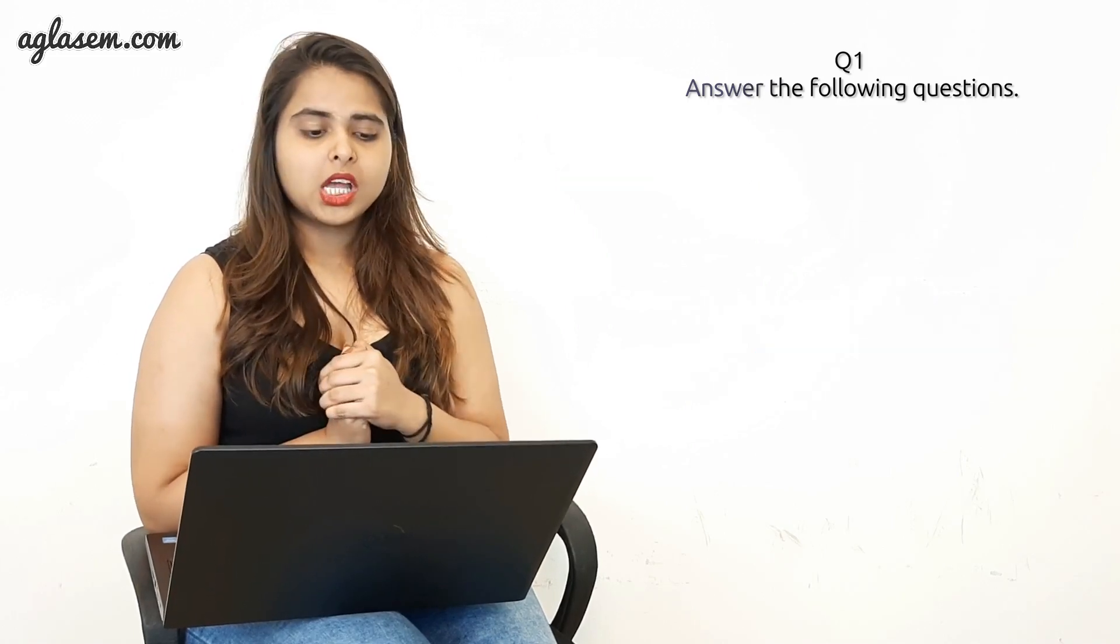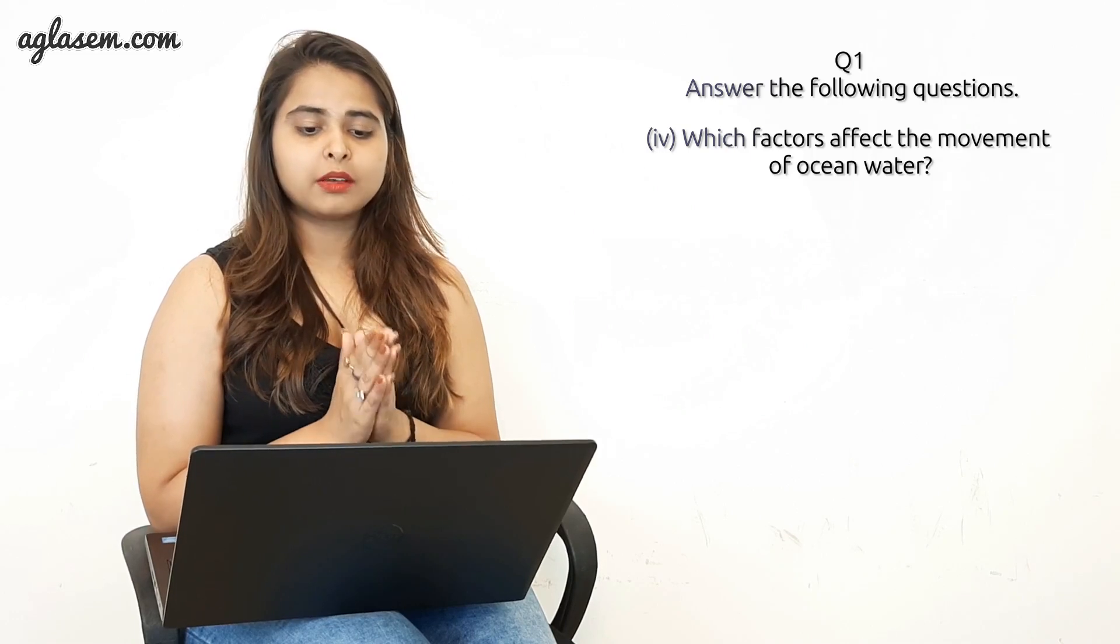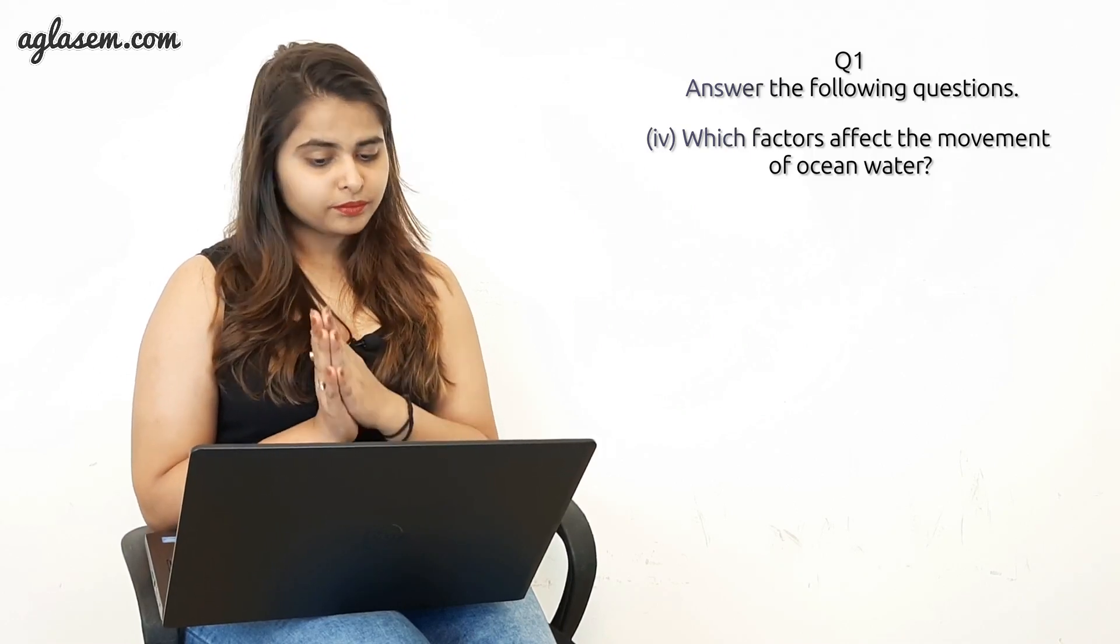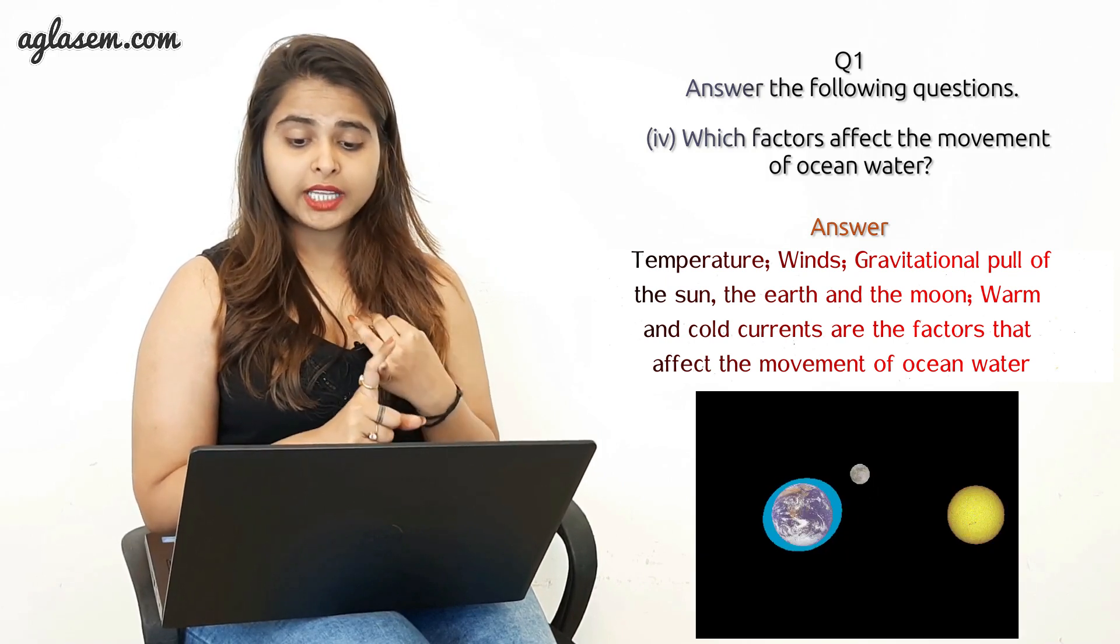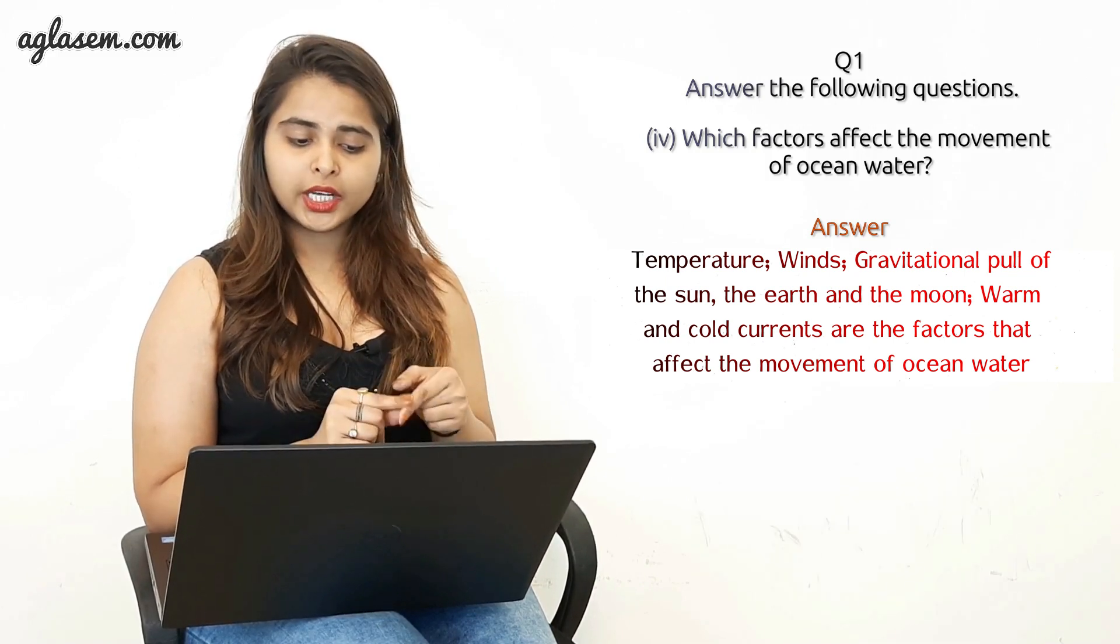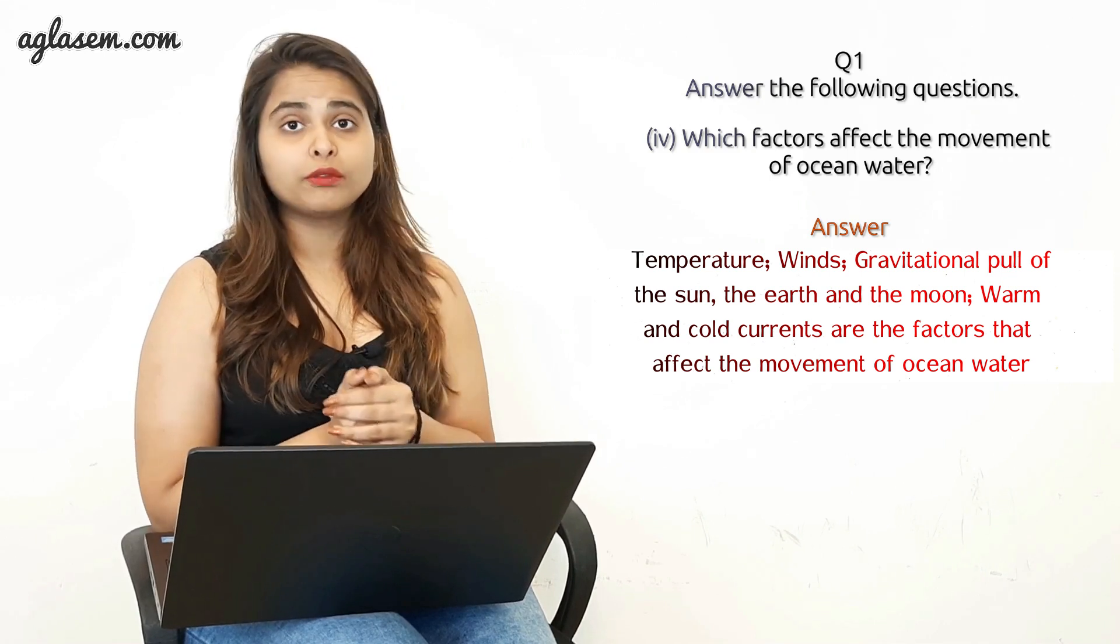The next question is what factors affect the movement of ocean water? Answer: Temperature, wind, gravitational pull of the sun, earth, and the moon, warm and cold currents are the factors that affect the movement of the ocean water.